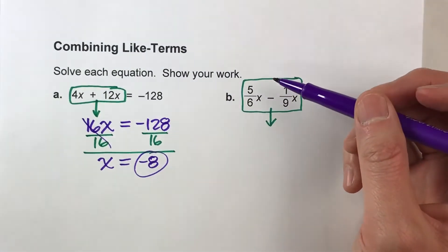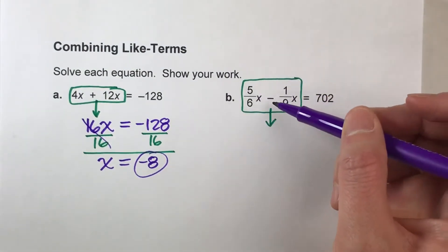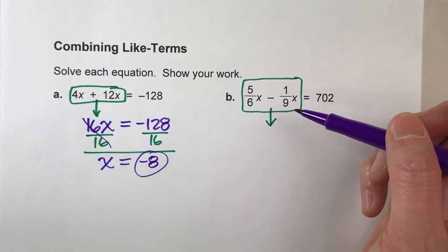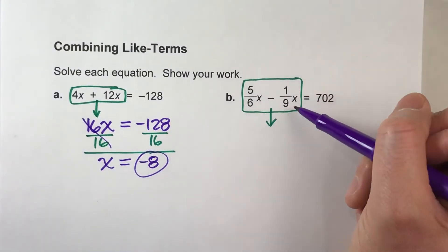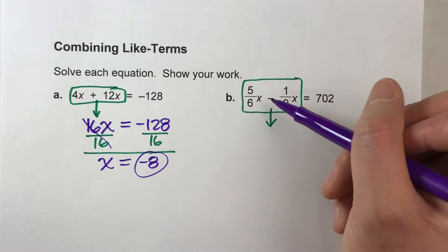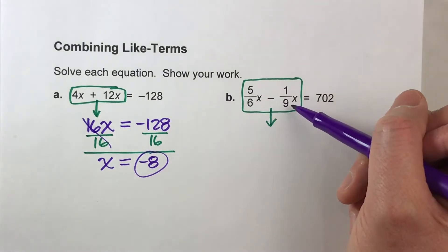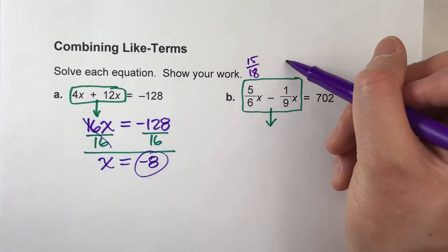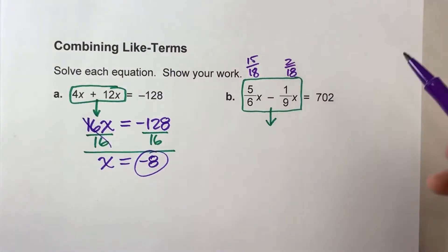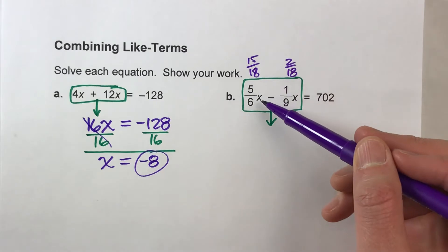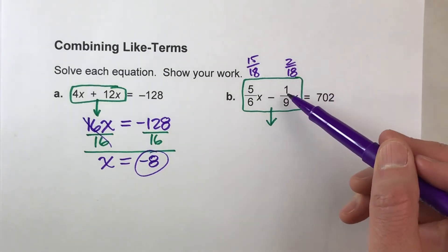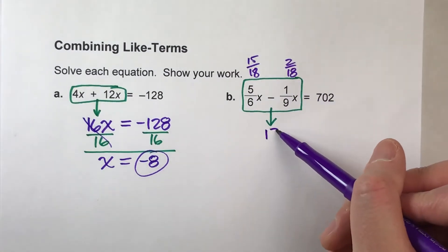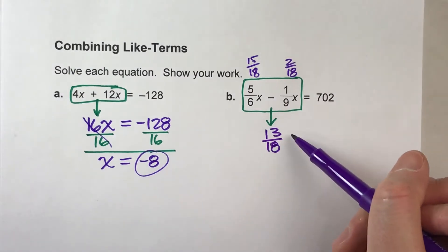So what we're going to have to do, though, before we can do 5/6x minus 1/9th, we need a common denominator. Notice 18 is my common denominator because 6 and 9 both go into 18. So this would be 15/18ths, and this would be 2/18ths. So 15/18ths x minus 2/18ths x gives me 13/18ths x.